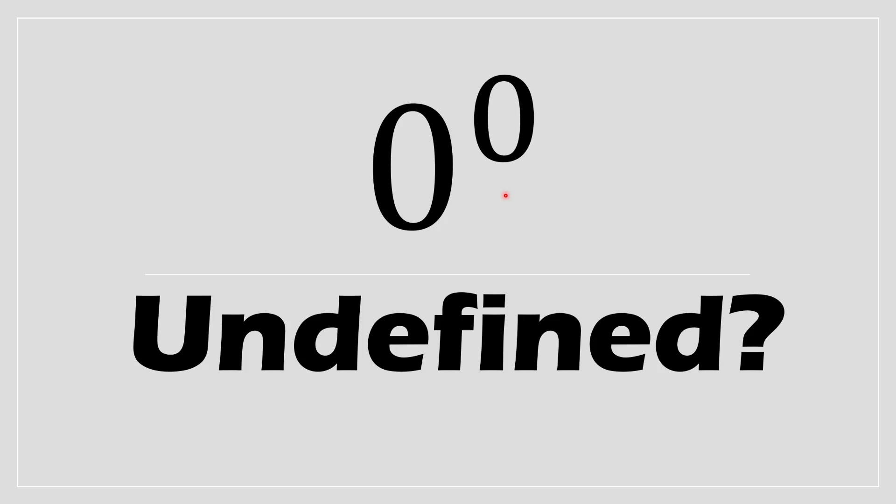Why is 0 to the power of 0 considered undefined? Let's jump right into it.